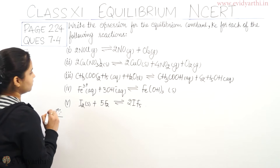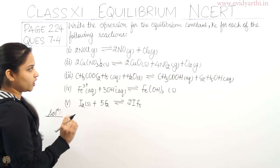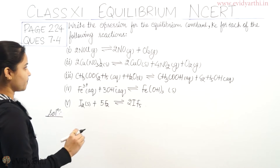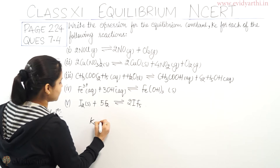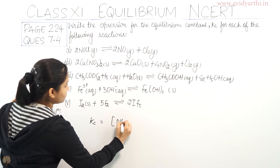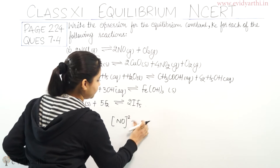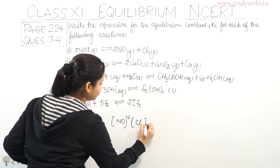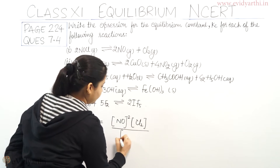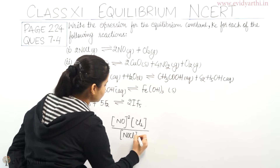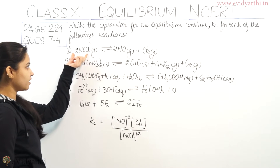The first part of the question: the equation given to us is 2NOCl(g) in equilibrium with 2NO(g) plus Cl₂(g). Kc for this equation equals [NO]² × [Cl₂] divided by [NOCl]², where the stoichiometric coefficients are used as powers. This is the equilibrium constant Kc for reaction number 1.